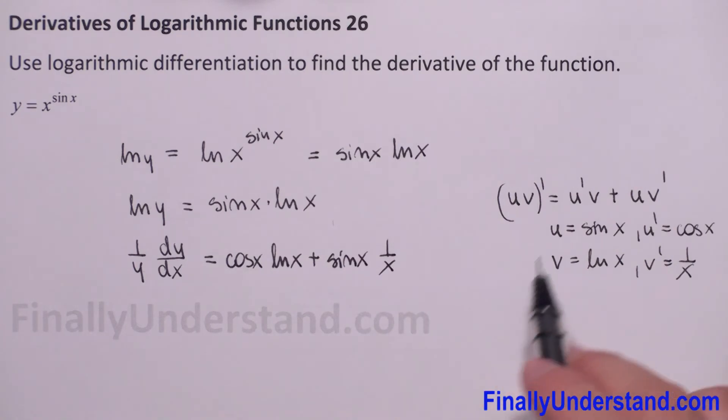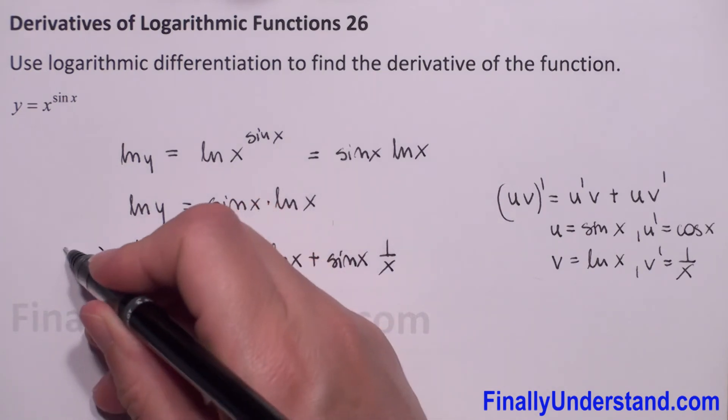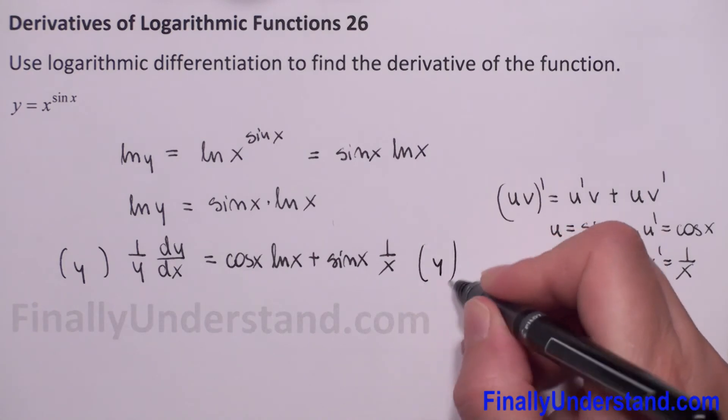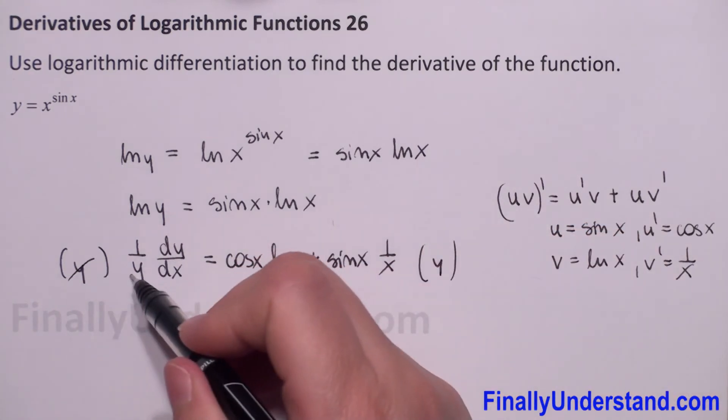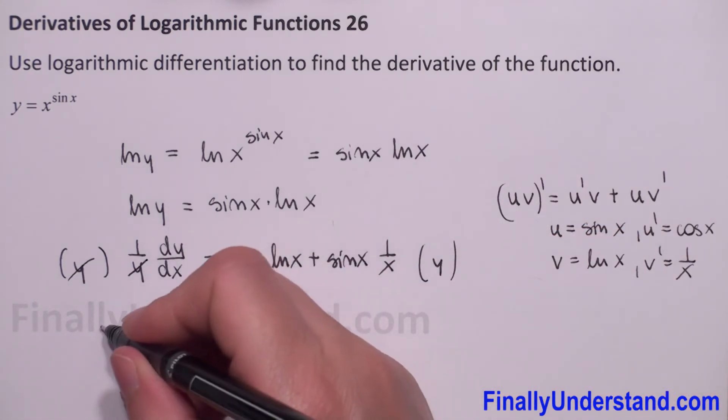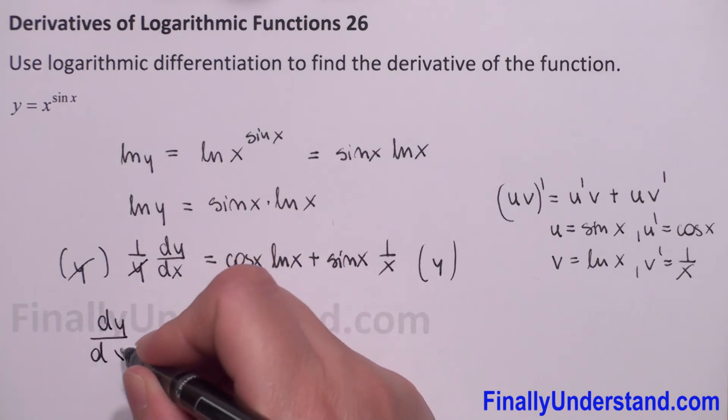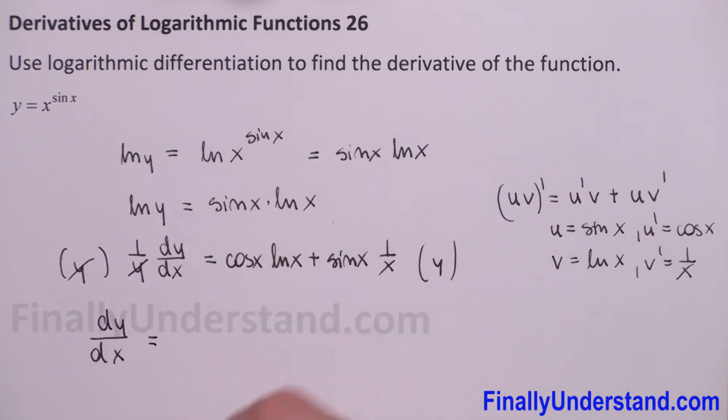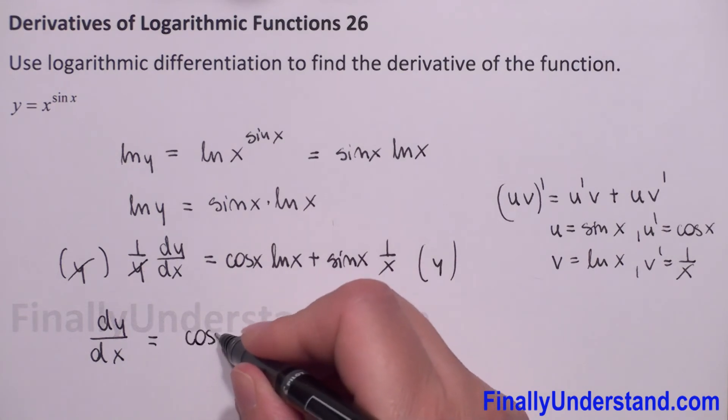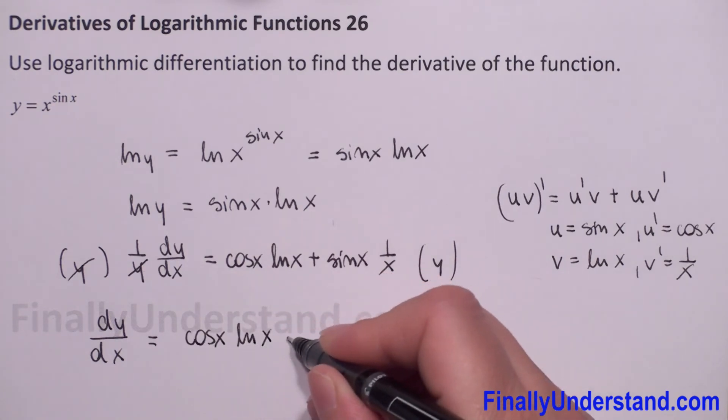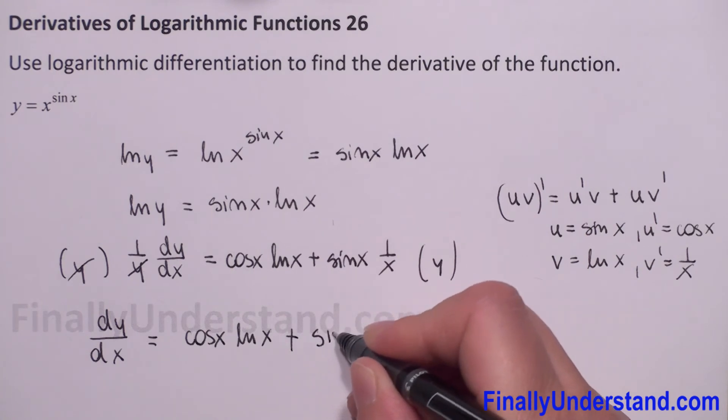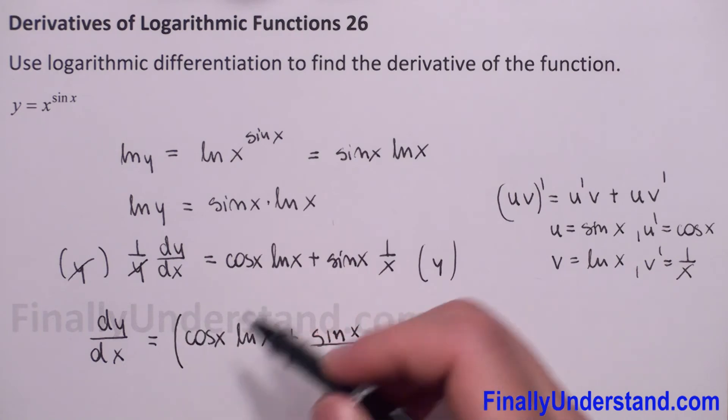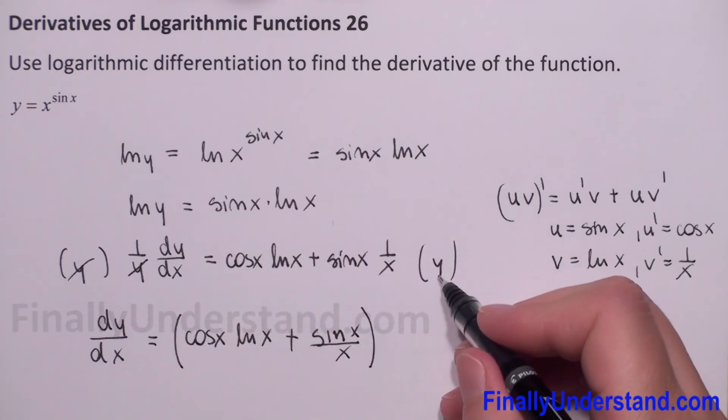I just used this formula. Now we can multiply both sides by y. So it will be y and y will reduce and we have dy over dx is equal cosine of x times natural log of x plus sine of x over x. We can put in parenthesis, times y.